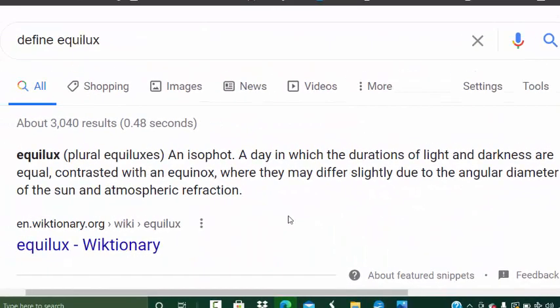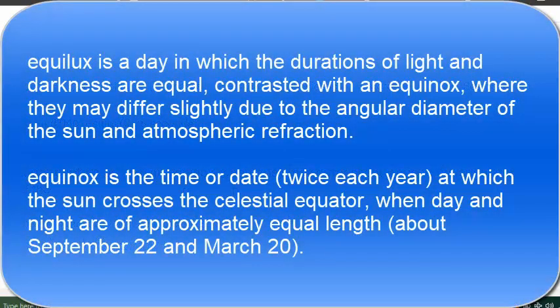The equilux is the exact time of the year when the days and nights are equal, but it occurs at different times in different locations and you need a computer to figure out when it occurs. The equinox, on the other hand, occurs at approximately the same time on the same day anywhere on the planet. That is very important, especially when you consider that the equilux could actually occur on different days even within Palestine or Israel — if people were tracking the equilux, they would show up to Jerusalem for feasts on different days.